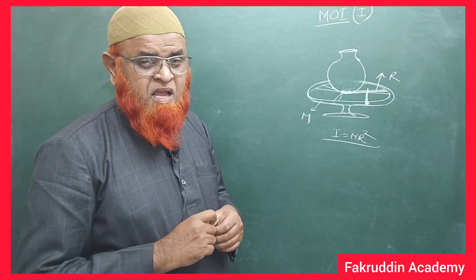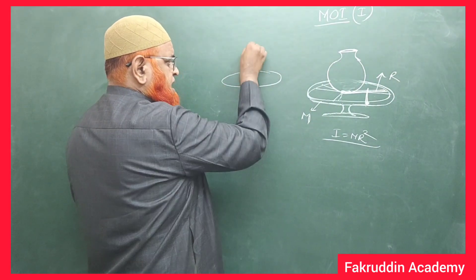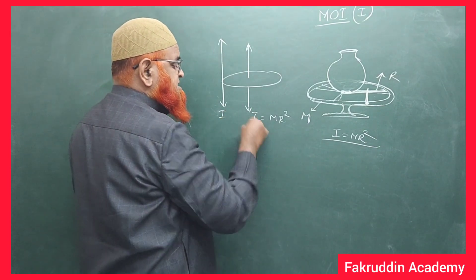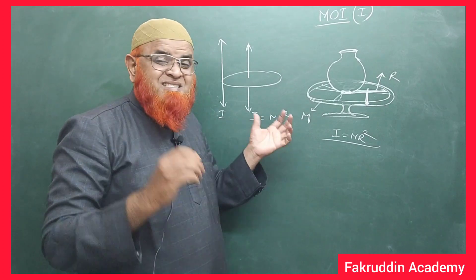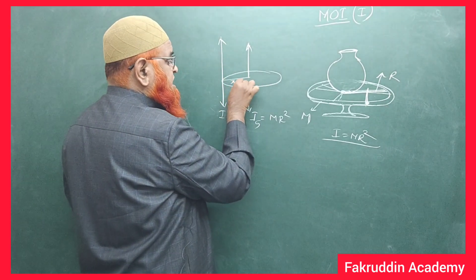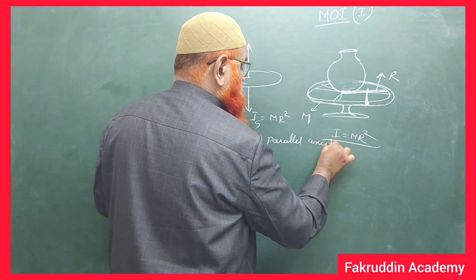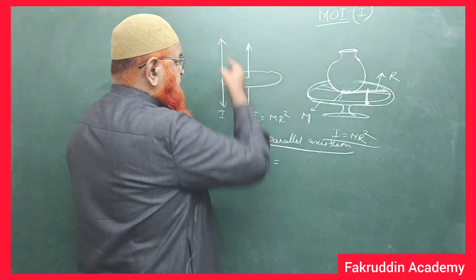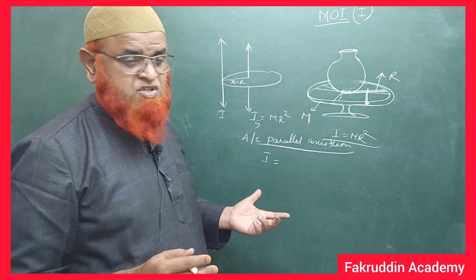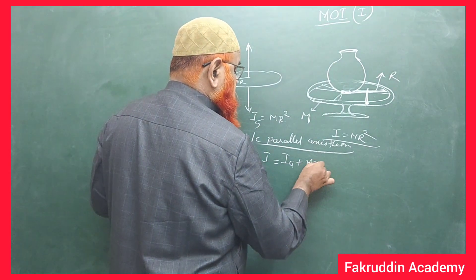Now there are two laws we should understand. For example, consider a ring. The moment of inertia of a ring with respect to its center of gravity is mr². If you want to find the moment of inertia with respect to some other axis — say axis x, which is at a distance equal to r from the center — according to the parallel axis theorem, if we know the moment of inertia with respect to the center of gravity, we can find it with respect to some other axis. That formula is I = Ig + mx².